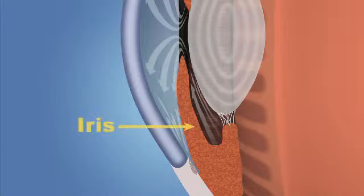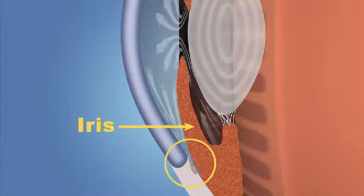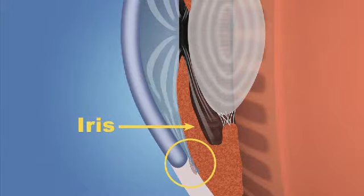The iris, the colored part of the eye, may close off the drainage angle. People of Asian descent and those who are far-sighted tend to be more at risk for developing this form of glaucoma.